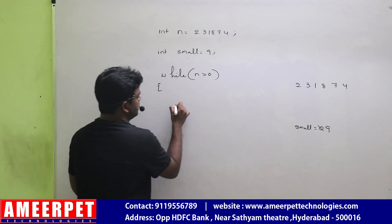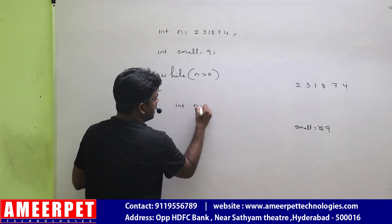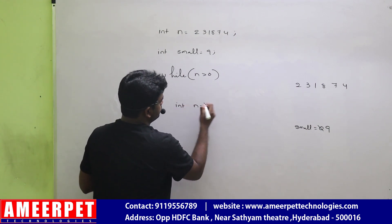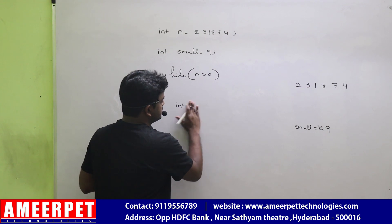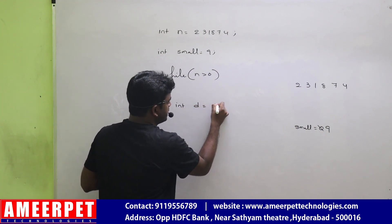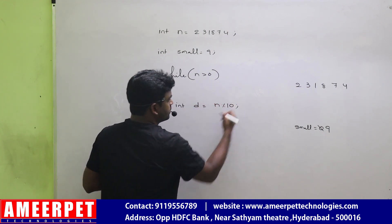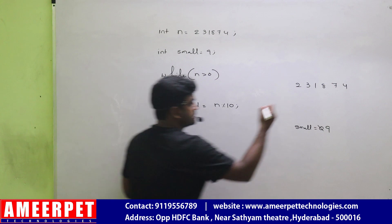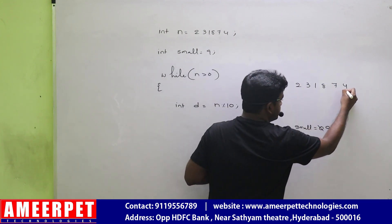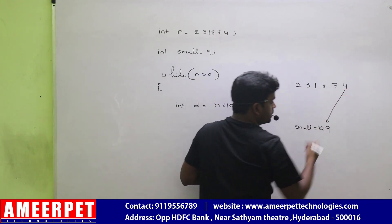Getting digit by digit — you know how to get the digit, very simple. int digit d equals to n mod 10. Just getting the digit, and then comparing.